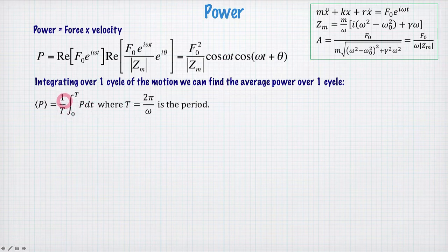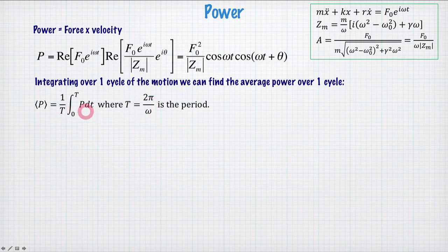So as we integrate over one period, capital T, given by this, integrate from zero to T, and here's the argument of the integral here, the power. Substitute in our expression up here, and we get an integral of these cosine functions.